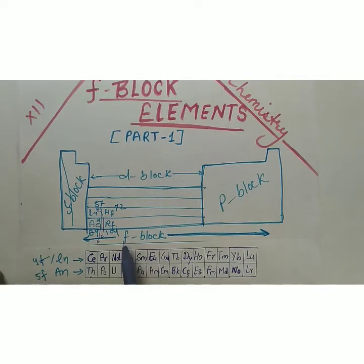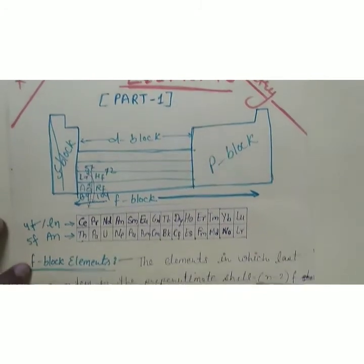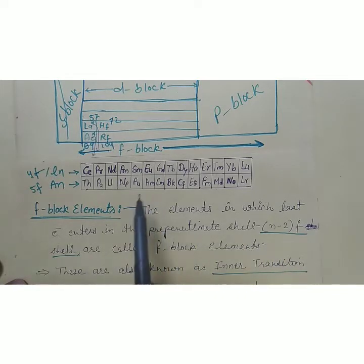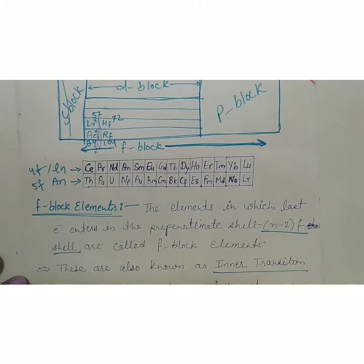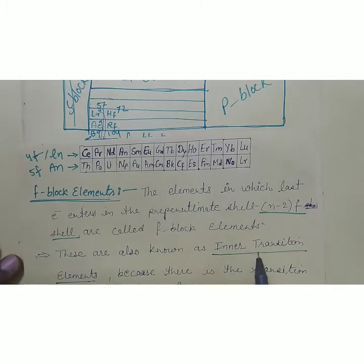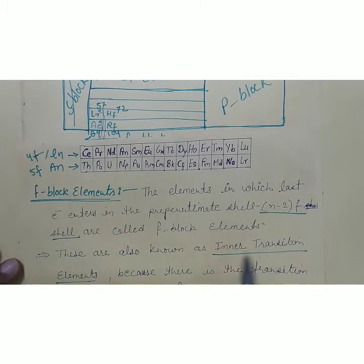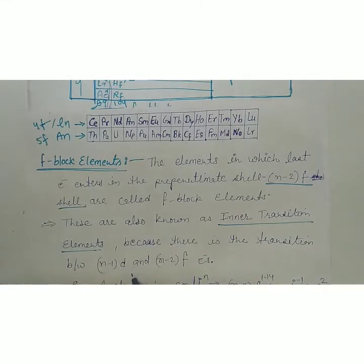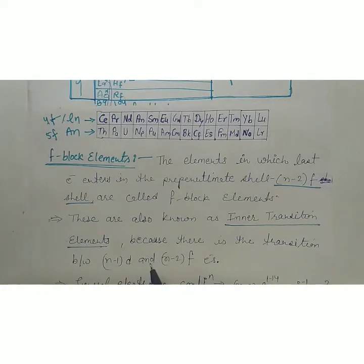F block elements are those in which the last electron enters in the pre-penultimate shell, meaning the (n-2)F shell. These elements are also known as inner transition elements. Why? Because in these elements the (n-2)F electrons can transit into the (n-1)D subshells, and the energy difference between the (n-1)D and (n-2)F subshells is very low.